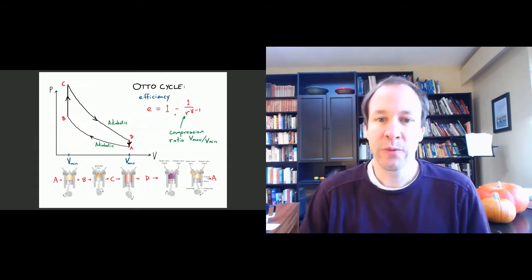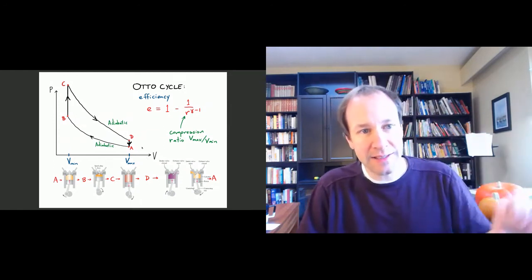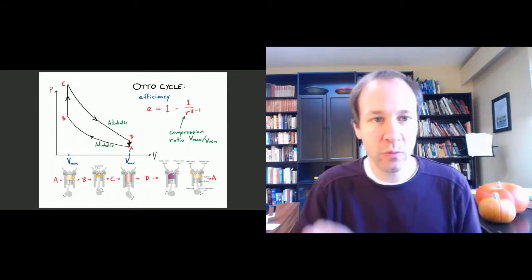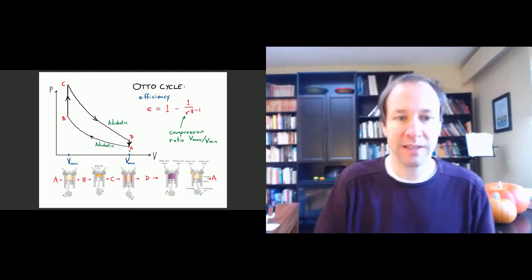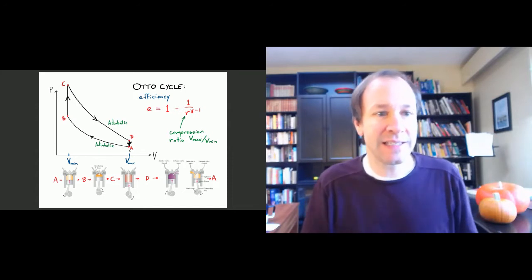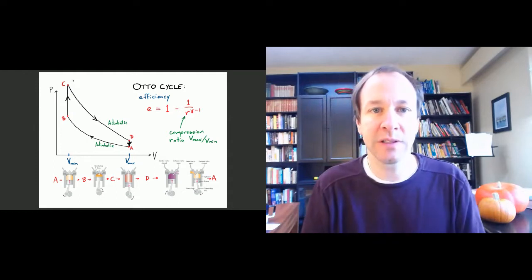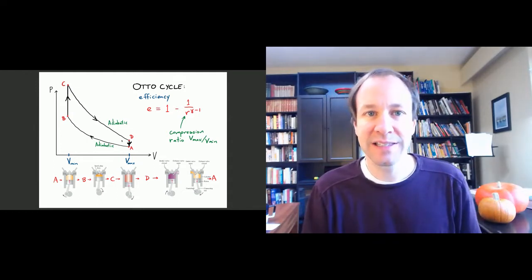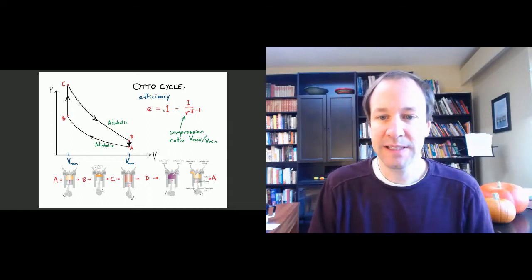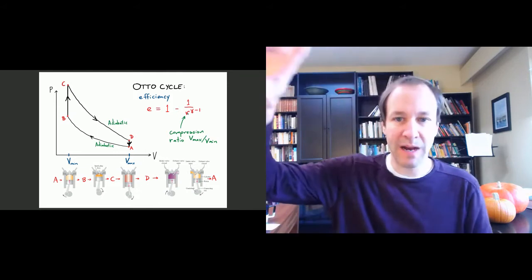We went through an analysis of not exactly the internal combustion engine cycle, but a good approximation — what we call the Otto cycle. After a somewhat complicated analysis, where we first found the temperatures at the various points, calculated the work for the various parts of the cycle, found the net work, calculated the heat for part B to C where heat is actually entering, and then calculated the efficiency.